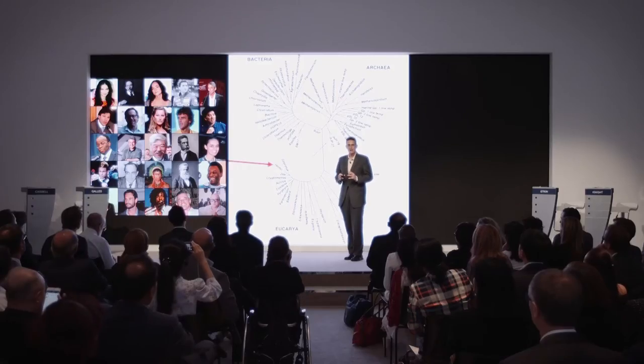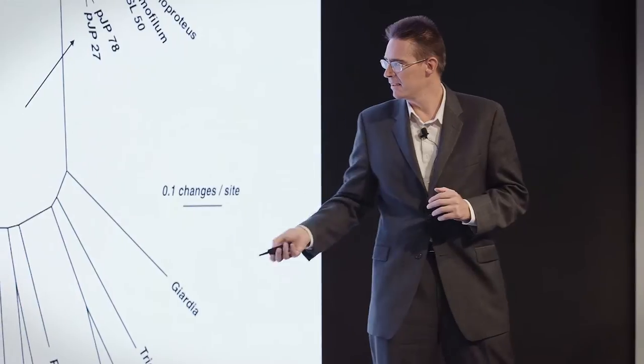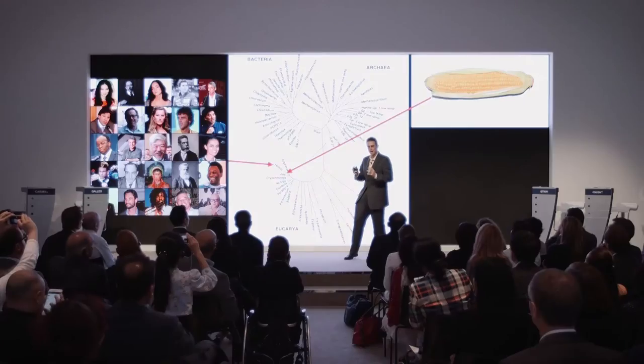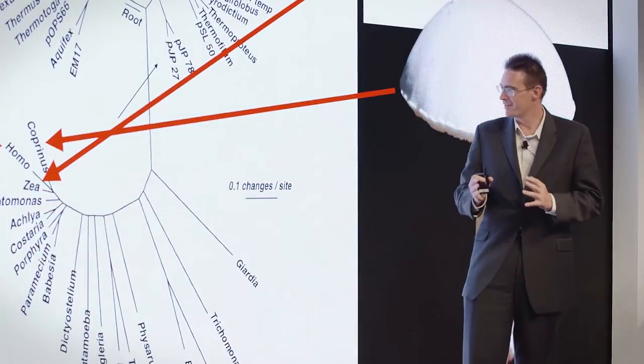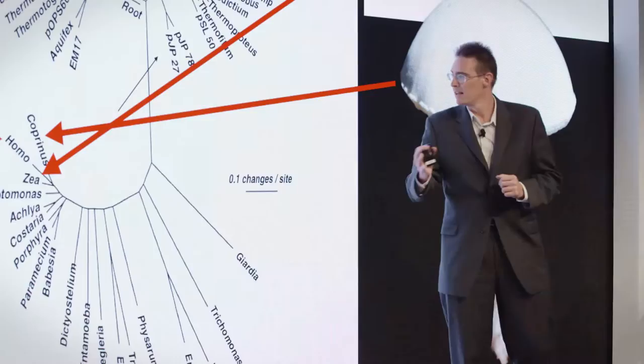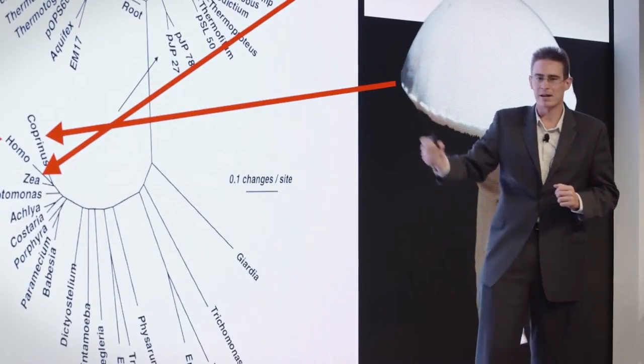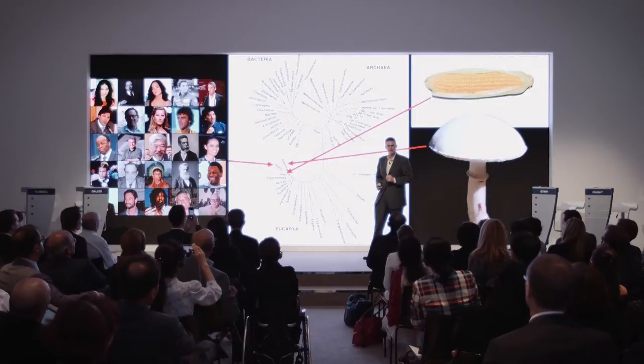And so you might wonder about the scale of this map. So on this scale, this is corn. So if you had cornflakes for breakfast, that's how much of the tree you were covering. And this is a mushroom, for example. So all of the plants and animals and fungi that we see around us are just this tiny twig of the tree, and all of the rest of life is microbial, including the microbes that inhabit our bodies.